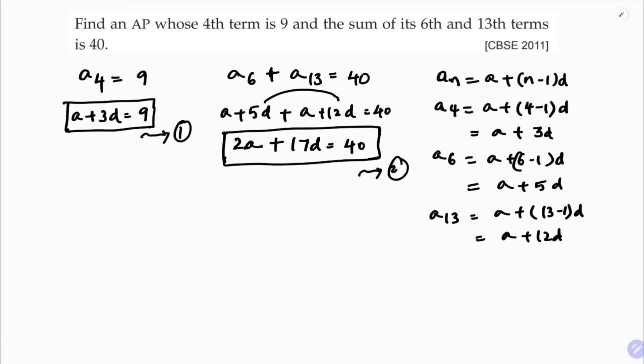So solving 1 and 2, I will solve by elimination method. Solving equation 1 and equation 2. Now see here 2A plus 17D is 40 and A plus 3D is 9. So I will multiply first one with 1 and second one with 2. I am making the coefficients of A equal. So I will multiply with 1 and 2.